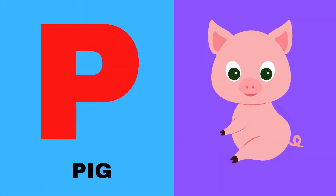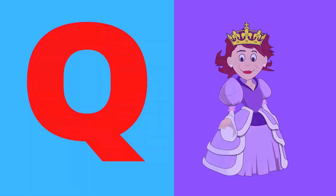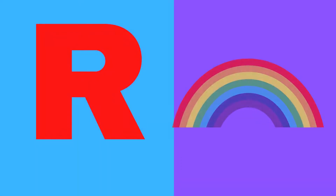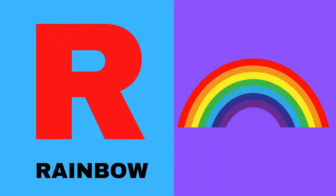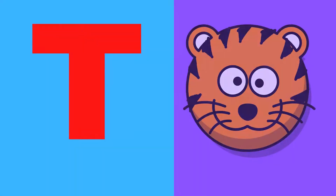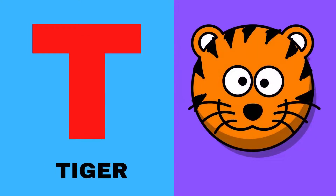P for pig, Q for queen, R for rainbow, S for sun, T for tiger.